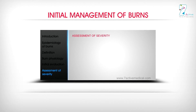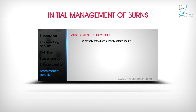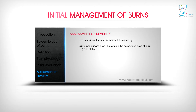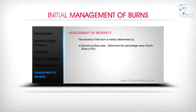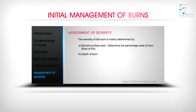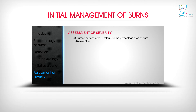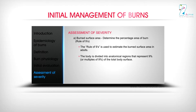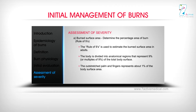Assessment of severity. The severity of the burn is mainly determined by: A) Burned surface area — determine the percentage area of burn using the Rule of Nines; and B) Depth of burn. The Rule of Nines is used to estimate the burned surface area in adults. The body is divided into anatomical regions representing 9% or multiples of 9% of the total body surface.